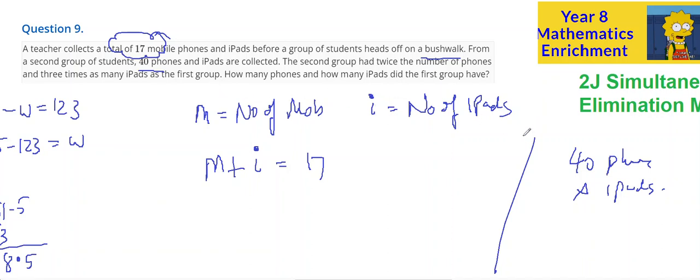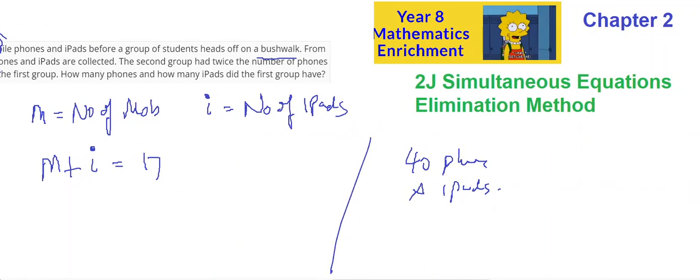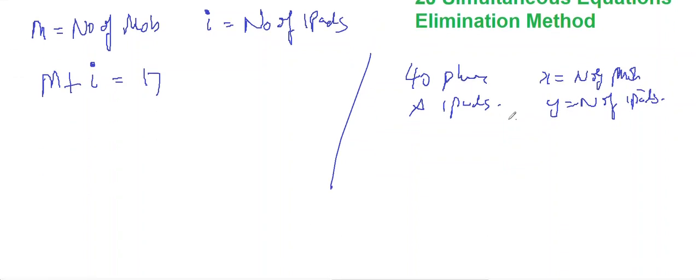The second group has twice the number of phones and three times the number of iPads as the first group. How many phones and how many iPads did the first group have? Okay, the second group had twice the number of phones, so let's do X is the number of phones, mobiles, and Y is the number of iPads. And I'm going to have an expression of X plus Y equals 40.